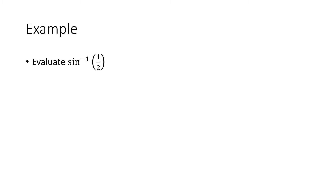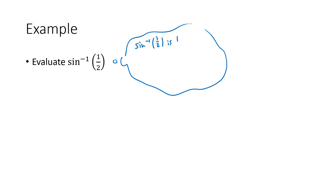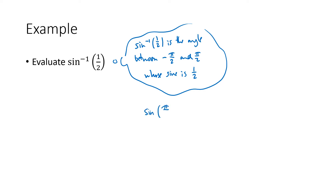Let's evaluate the inverse sine of 1/2. The inverse sine of 1/2 is the angle between negative pi over 2 and pi over 2 — remember, that's part of our definition — whose sine is 1/2. We know the sine of pi over 6, which is 30 degrees, is 1/2. And pi over 6 is between negative pi over 2 and pi over 2. Check. So the answer is simply pi over 6.